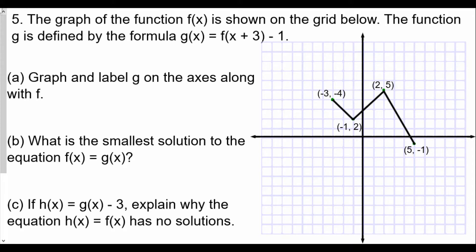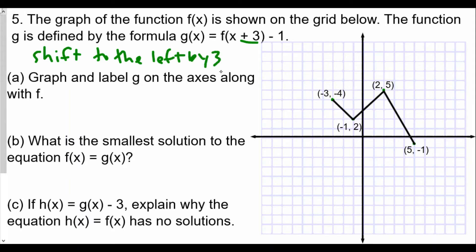Number 5: the graph of the function f(x) is shown on the grid below. The function g is defined by the formula g(x) = f(x + 3) - 1. Graph and label g on the axis along with f. We're looking at the type of shifting going on here. We see x + 3, which means we're going to shift to the left by 3, and then minus 1 means we're going to shift down by 1.